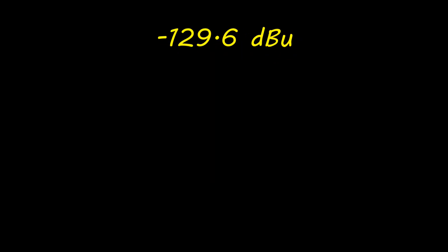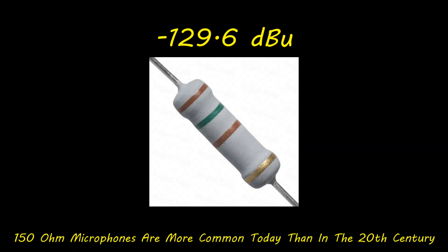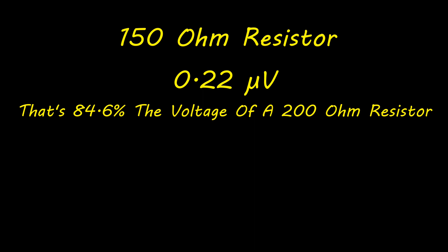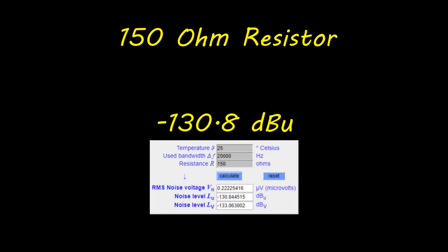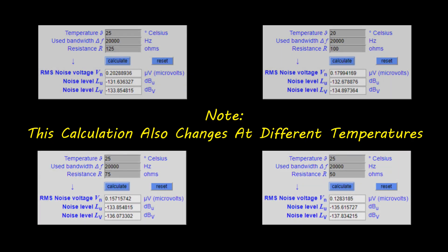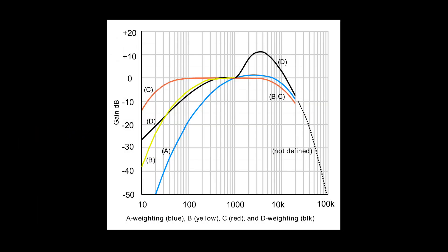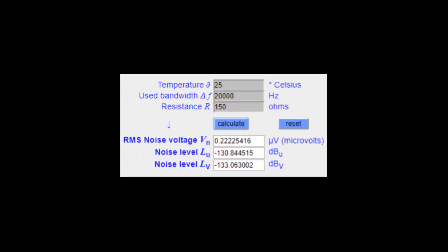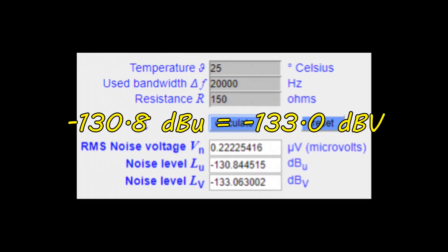If that negative 129.6 dBu looks a little higher than you're used to seeing, there are a few reasons for that. First, many times a 150-ohm resistor is used instead when making measurements. This lower resistance of only 0.22 microvolts means a drop in noise down to negative 130.8 dBu. Some manufacturers may cheat and use an even lower ohm resistor to yield even lower results. Another reason this level may appear lower is because they apply an A-weighting curve to the measurement, which simulates the way humans hear different frequencies at low volumes, changing the equalization of the noise to reflect more the way we hear it, resulting in a lower measurement. Yet another way a manufacturer may cheat is by reporting the measurement in dBV instead of dBu — if that's the case, the noise level will look 2.2 dB lower than it actually is.